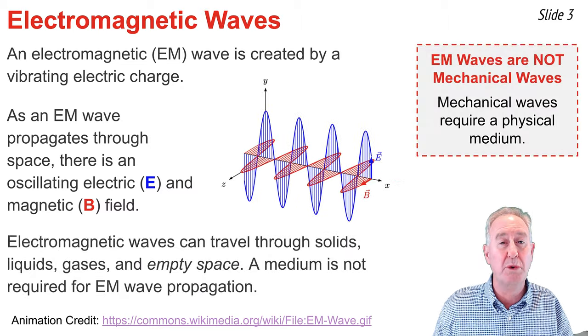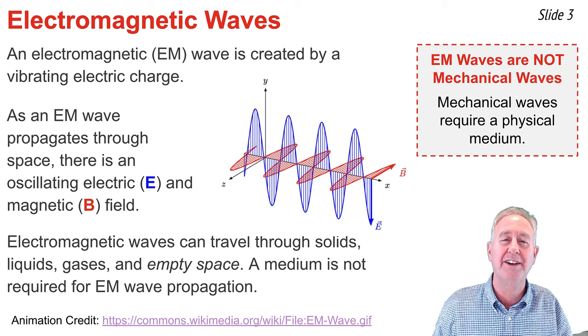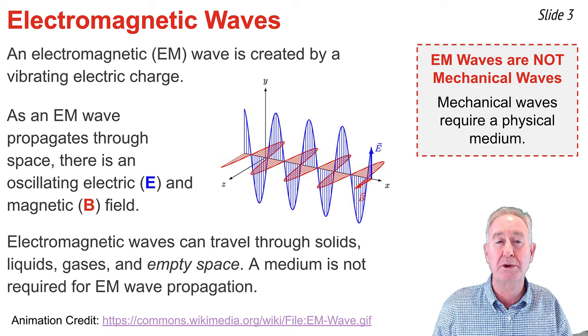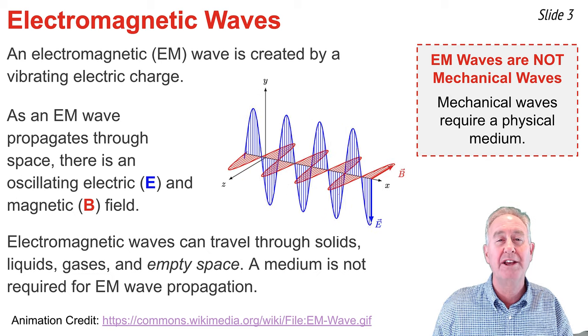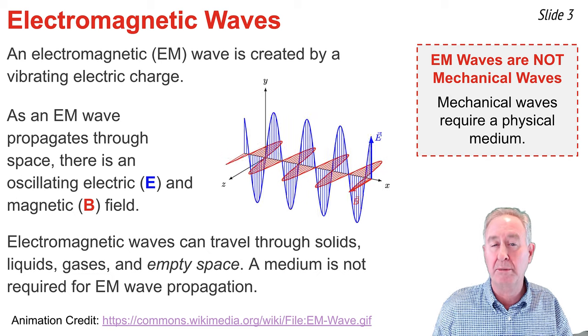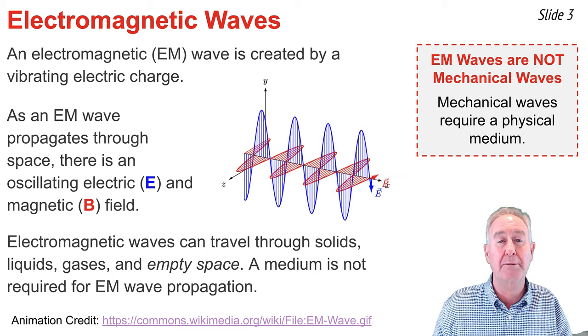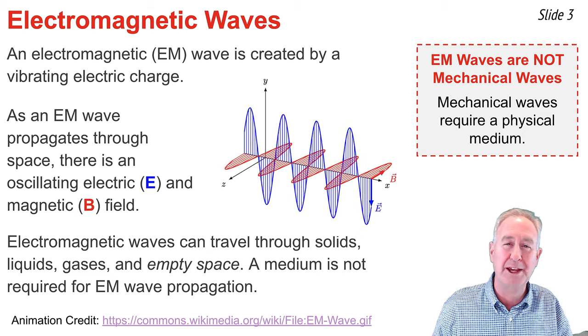An electromagnetic wave is quite different than a mechanical wave. A mechanical wave is produced when a particle of a medium is set into vibrational motion. That particle forces neighboring particles to begin vibrating, and a mechanical wave can propagate through the medium.